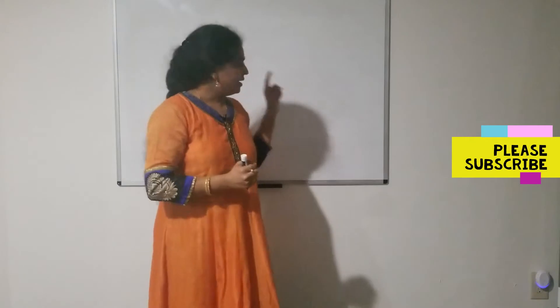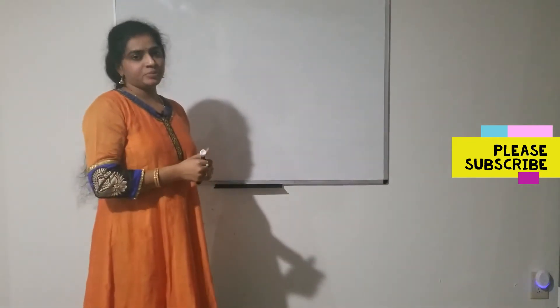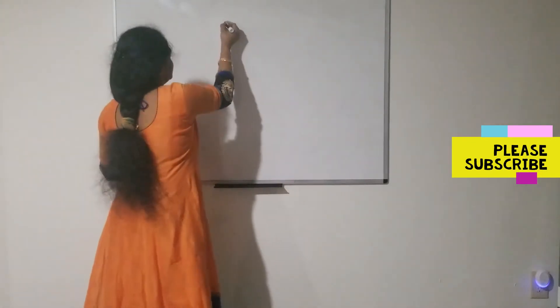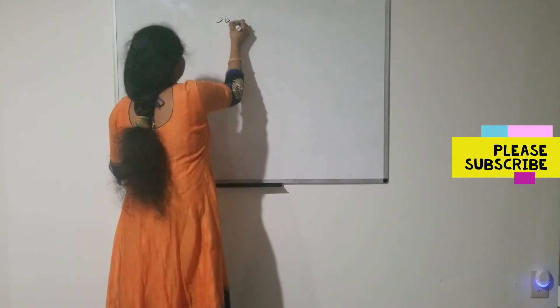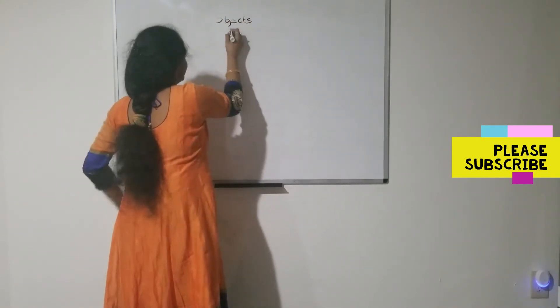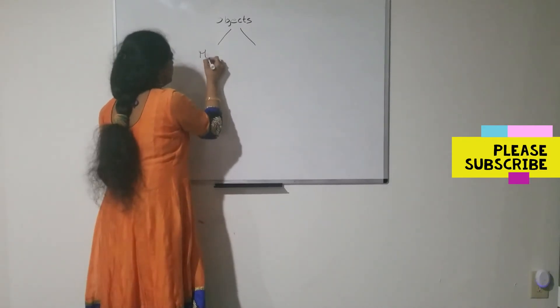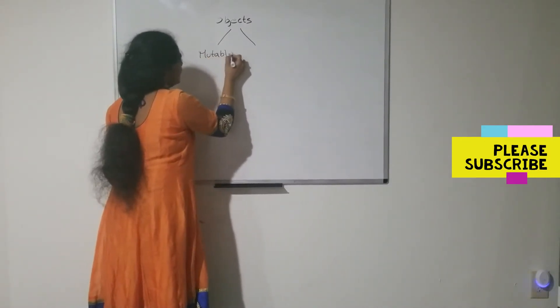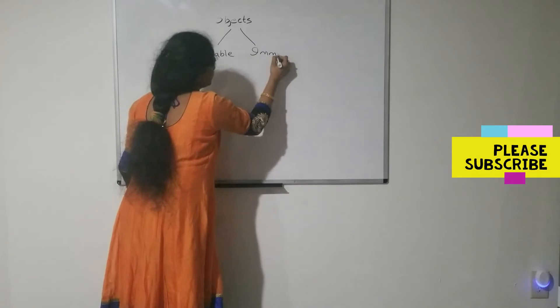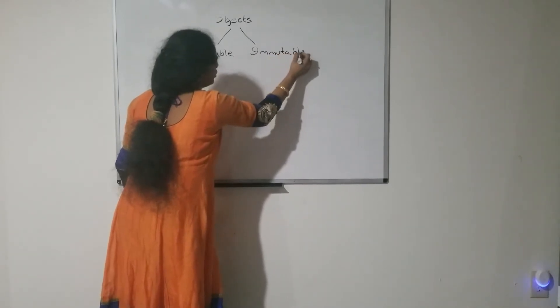Hello everyone. In this video, let us learn about different types of objects. Before going to learn about the remaining data types, let us learn about these different types of objects first. Objects are classified into two types: mutable objects and immutable objects.